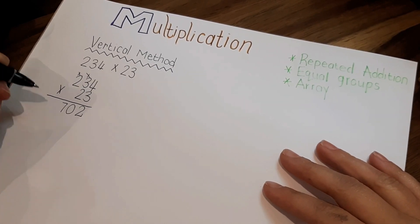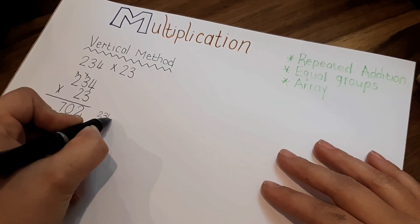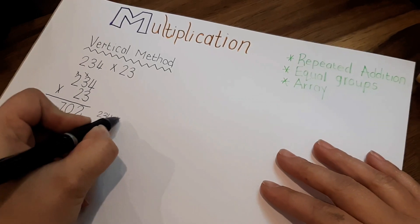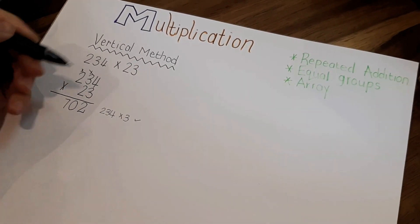Remember, one digit in a spot. 3 times 2 is 6 plus 1 is 7. So basically this 702 is 234 times 3. So we are one step closer to getting our answer.